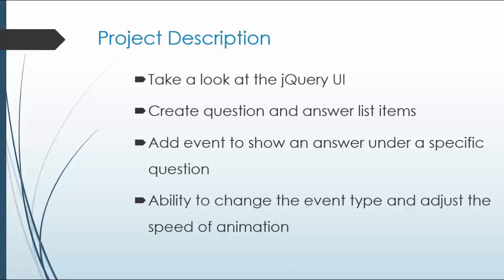For the project itself, we'll create question and answer list items. We will add an event to show an answer under a specific question, and we'll have the ability to change the event type and adjust the speed of animation. We'll be able to say hover if we want to hover over the questions instead of click or double-click. Speed of animation is self-explanatory — it's just how fast the answer opens.